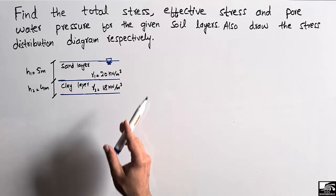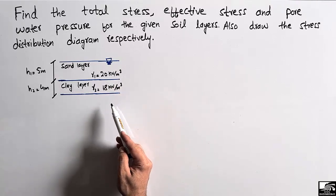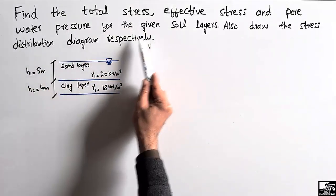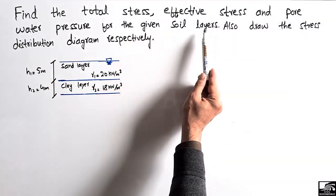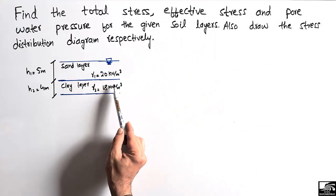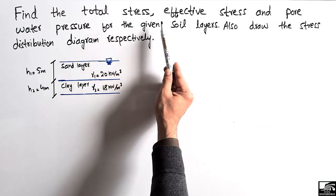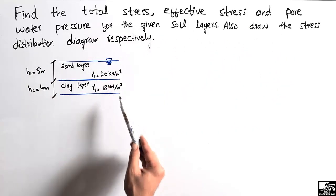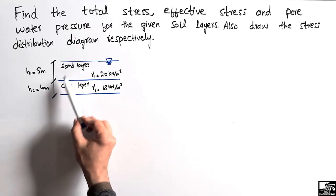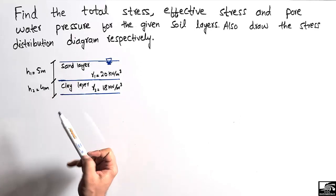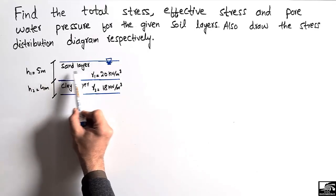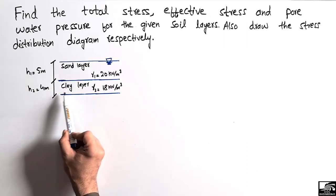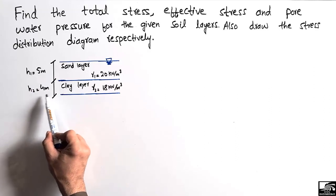The problem states: find the total stress, effective stress, and pore water pressure for the given soil layers. We are given two soil layers and we have to find out these stresses and also draw the stress distribution diagram. The first soil layer is a sand layer with a height of five meters, and the second layer is a clay layer with a depth of four meters.